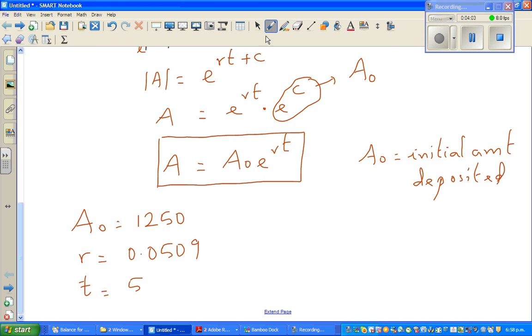Therefore, I can say A = 1250 times e^(0.0509 times t).